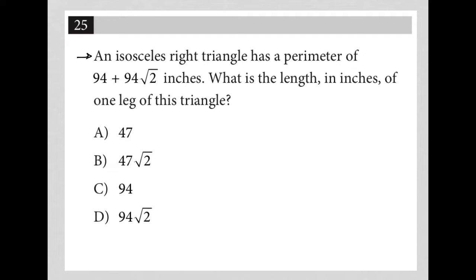This question says, an isosceles right triangle has a perimeter of 94 plus 94 root 2 inches.